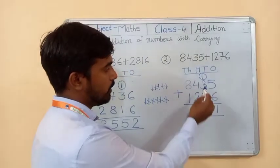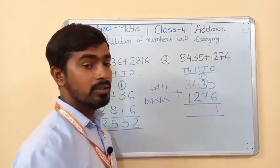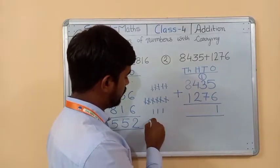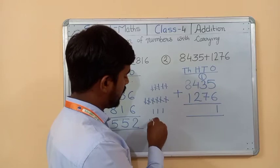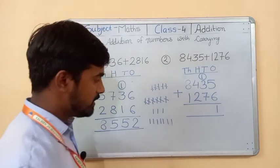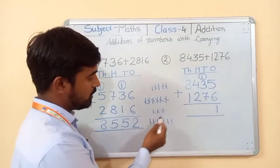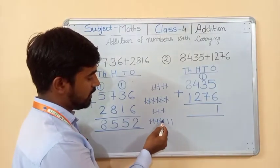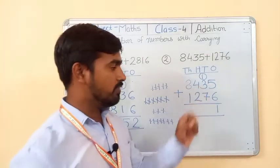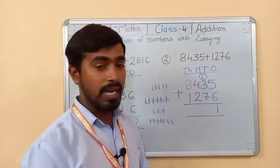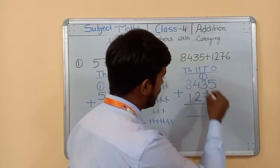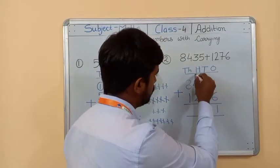Now three plus seven. Draw three lines, then seven lines, add them — that gives ten. Three plus seven equals ten, plus one carry equals eleven. Write one here; carry goes to the next number.